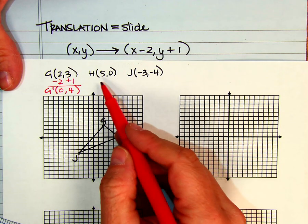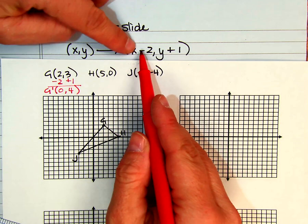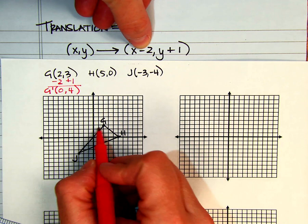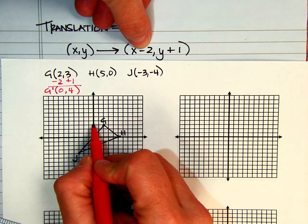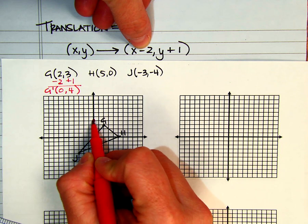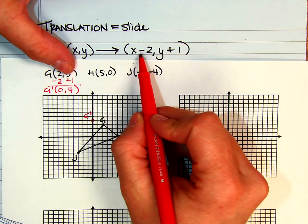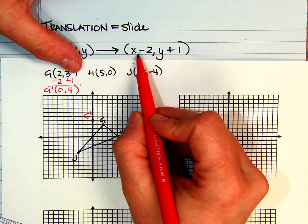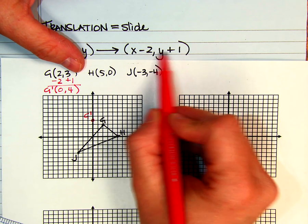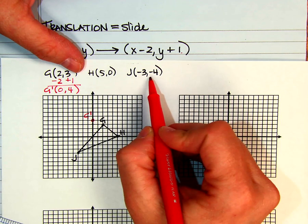If we are just looking at a graph, we can move, because we're in the x, we can move to the left 2 and up 1. And that would be my G prime. So you can either count boxes, or you can actually apply this rule to each of my coordinates.